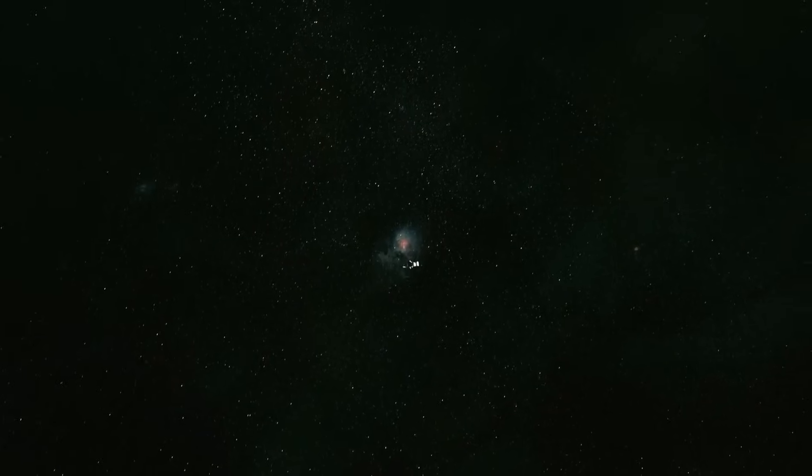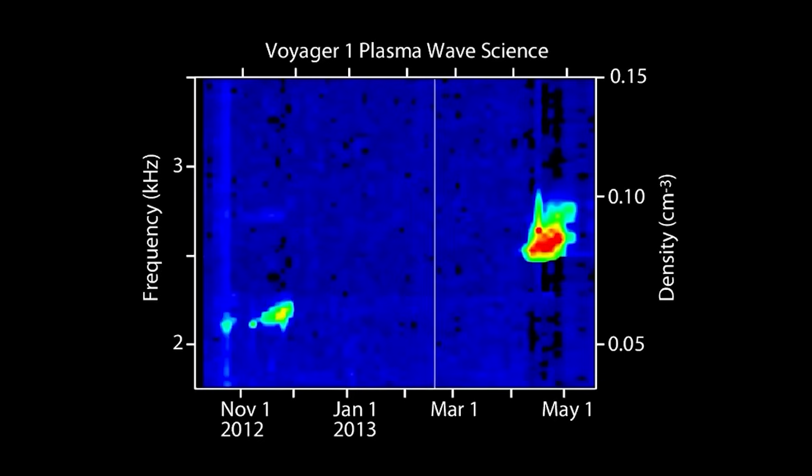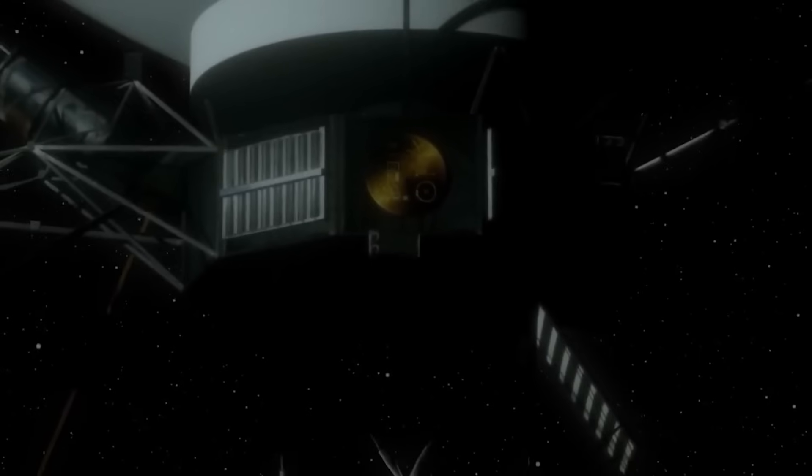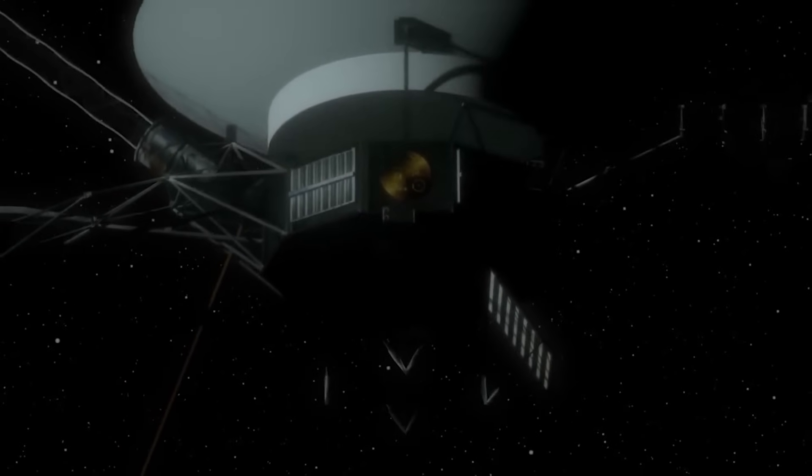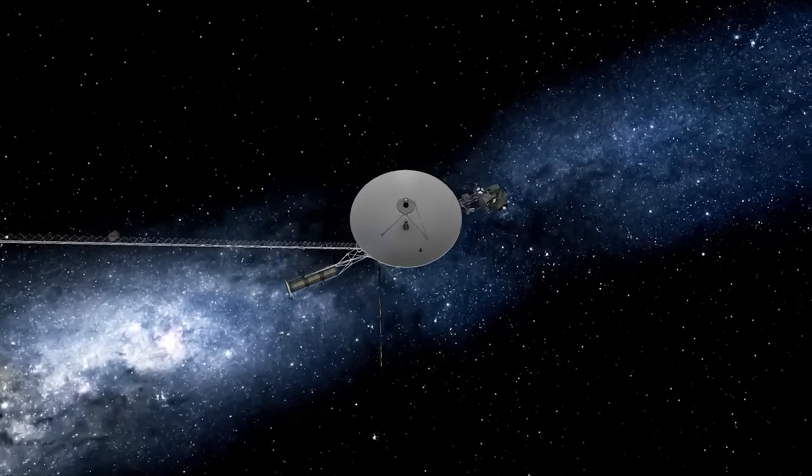Could the density surge be an illusion caused by calibration errors in Voyager 1's aging instruments? Extensive checks found the sensors are still accurately reading incoming data. The spike was also confirmed by the spacecraft's plasma wave instrument, ruling out a malfunction.